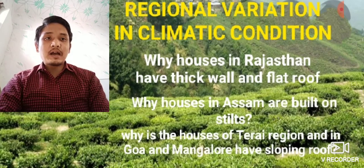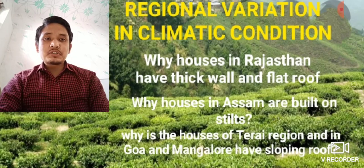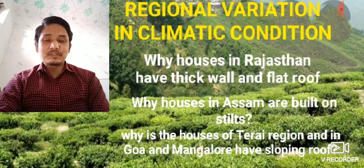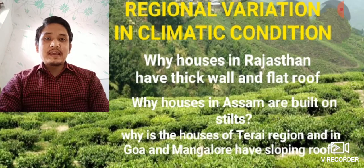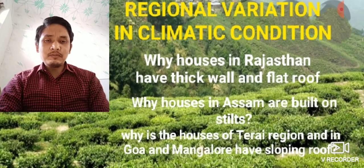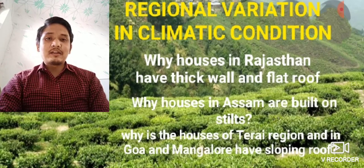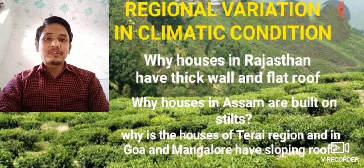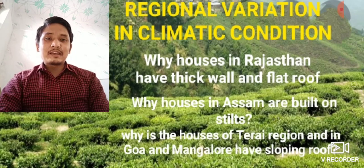Now a question from the book: why do houses in Rajasthan have thick walls and flat roofs? Houses in Rajasthan have flat roofs so that rainwater can be collected or stored during the rainy season, since there is low rainfall. They have thick walls so that residents can be protected from the extreme heat.